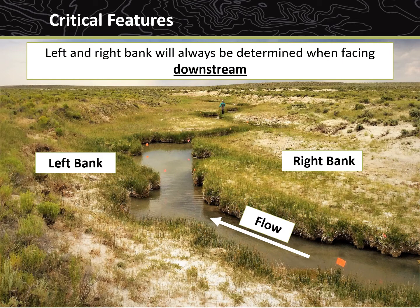When identifying these features, it is important to keep track of at which bank each feature is located. The Lotic AIM protocol defines sides of the banks relative to the direction of the flow of the water. Therefore, left and right bank will always be determined when facing downstream.